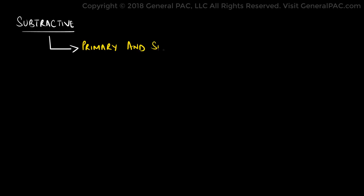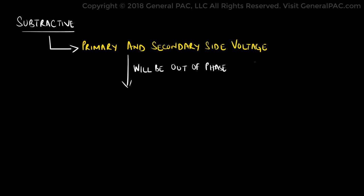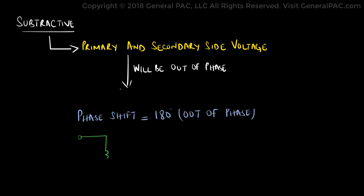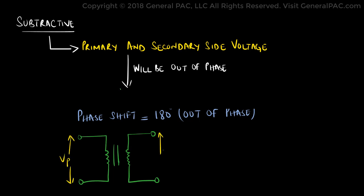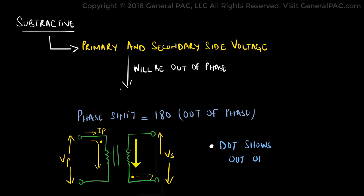On the other hand, if we consider subtractive polarity, then it means that the primary and the secondary voltage will be out of phase. In other words, they will have a phase shift of exactly 180 degrees. We can observe subtractive polarity by drawing a dot marking on the top end of the primary winding. However, for the secondary winding, the dot will be marked on the lower end instead. This is to show the out of phase characteristic.